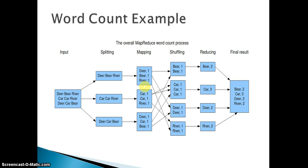The second mapper output would be car comma one, car comma one, and river comma one. And similarly, our third mapper output would be deer comma one, car comma one, and bear comma one. Once we get these outputs, which are our key-value pairs — as discussed, once we pass the offset address and actual content as input to the mapper, the output of the mapper would be key-value pairs. So our key-value pair is nothing but word comma one.